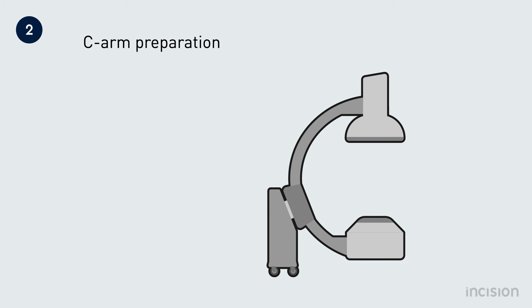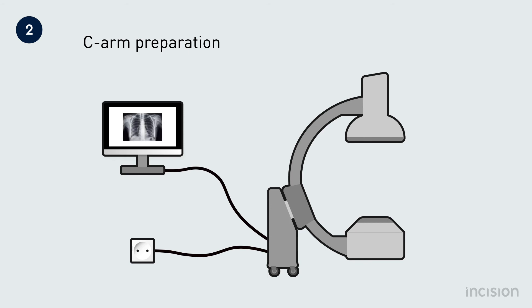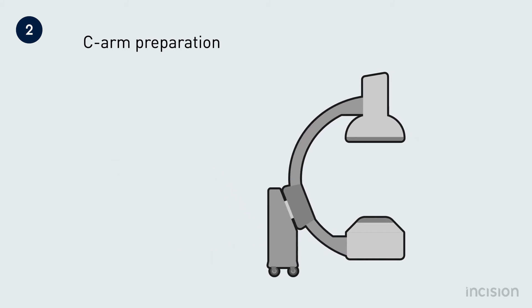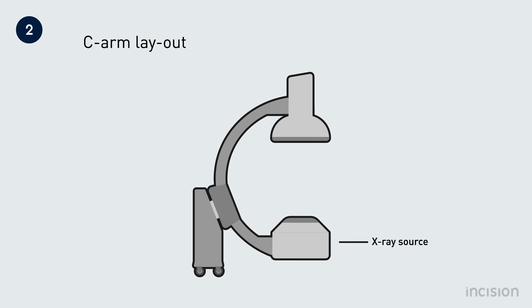Before the C-arm can be used to image the patient, the device and the surroundings should be prepared for use. The C-arm is connected to the power grid of the hospital and to the monitor on which the image is displayed. Connecting cables should be placed so that the C-arm can be moved freely. The C-arm consists of two components: the x-ray source and the x-ray detector. The x-rays are formed at the x-ray source, after which they pass through the patient's body. At the x-ray detector, the x-rays are converted to a digital image.